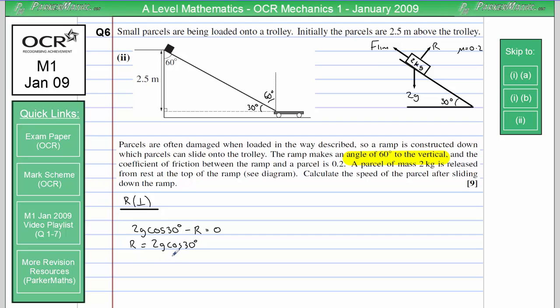Now, we could work that out, but we would get a decimal, because cos 30 gives us a third. So we're just going to leave it for now as 2g cos 30, because we're not interested in the value of the normal contact force.